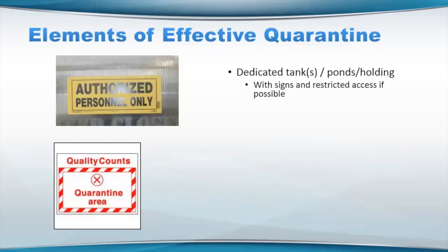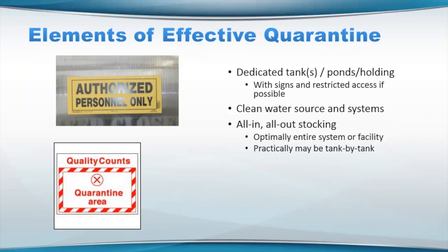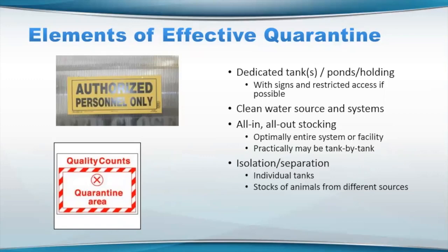So what are some elements of effective quarantine? Dedicated tanks, ponds, and holding areas with signs and restricted access, clean water sources in clean systems, and ideally all-in, all-out stocking. I know this is a little bit more complicated, but ideally all-in, all-out is preferred, typically in an entire system — that will help reduce issues with potentially age-related diseases or older animals giving diseases to younger animals coming in. If you need to, maybe even tank by tank, but all-in, all-out is a good principle. Isolation and separation of units is very important.